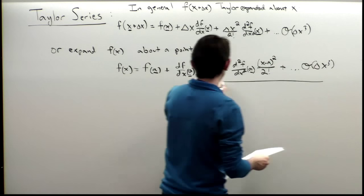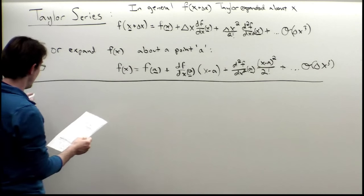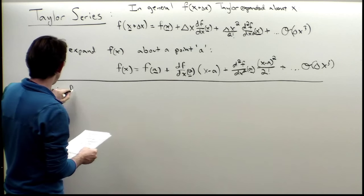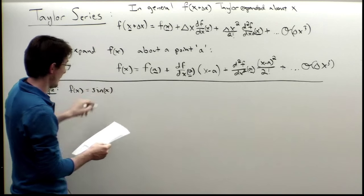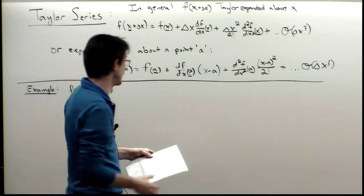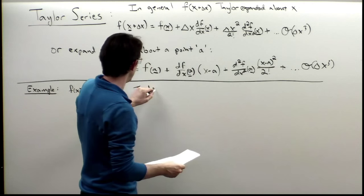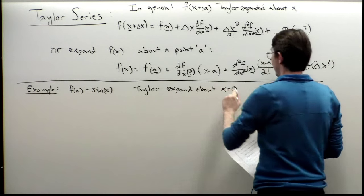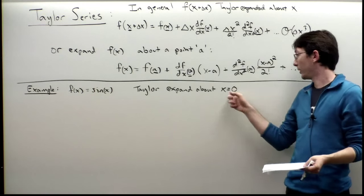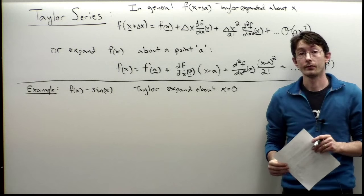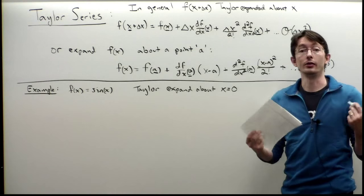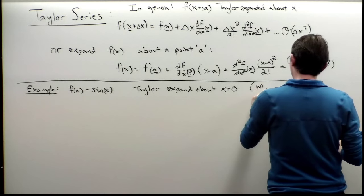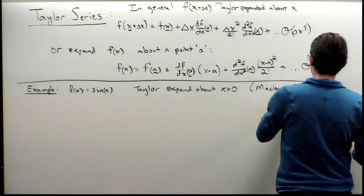Now let's do a quick example. f(x) = sin(x), and we're going to Taylor expand about x = 0. This actually has a special name — if you Taylor expand about x = 0, that's called the Maclaurin series.